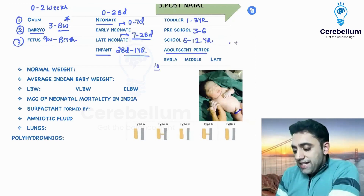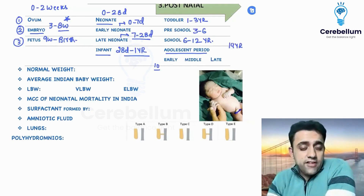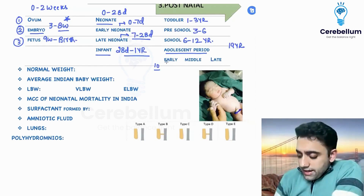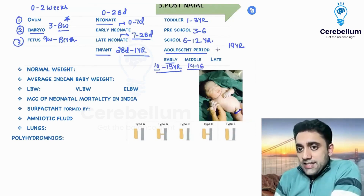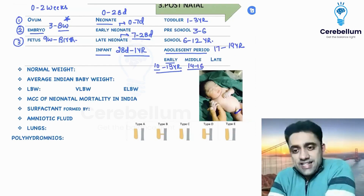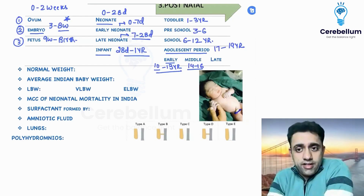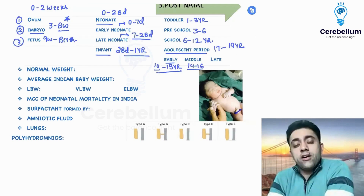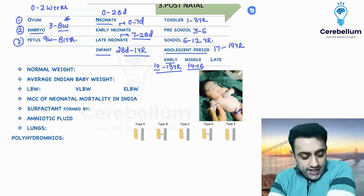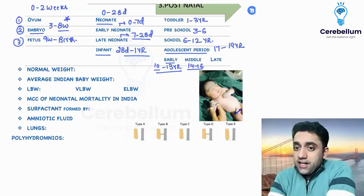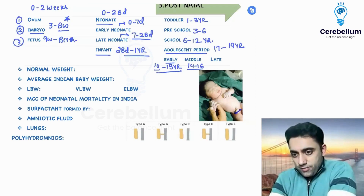Adolescent period starts at 10 years of life and finishes at 19 years. Early adolescent is 10 to 13 years, middle adolescent is 14 to 16 years, and late adolescent is 17 to 19 years of life.